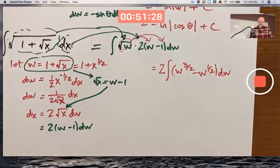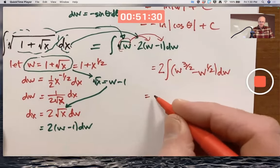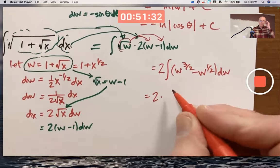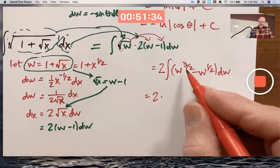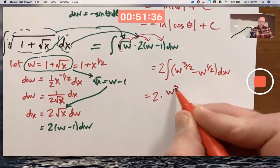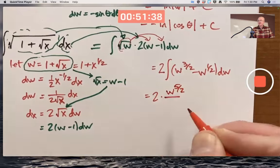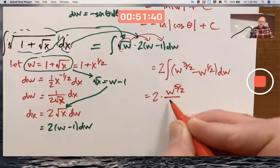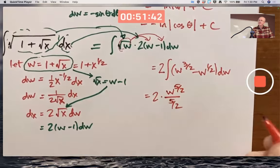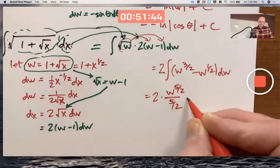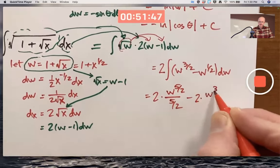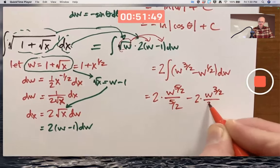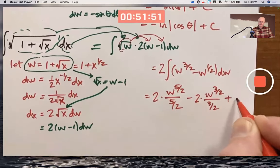And that now is a fairly easy integral to do. You need to do the reverse of the power rule. You need to add one to the exponent instead of subtract one. Instead of multiplying times that exponent, you divide by it. Do the same thing with integrating w to the 1 half. Don't forget your plus c.